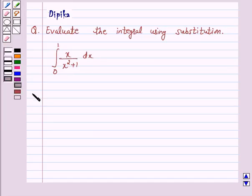So let's start the solution. Put x square plus 1 is equal to t in the given integral. Then, 2x dx is equal to dt. Now, consider the integral without limit.